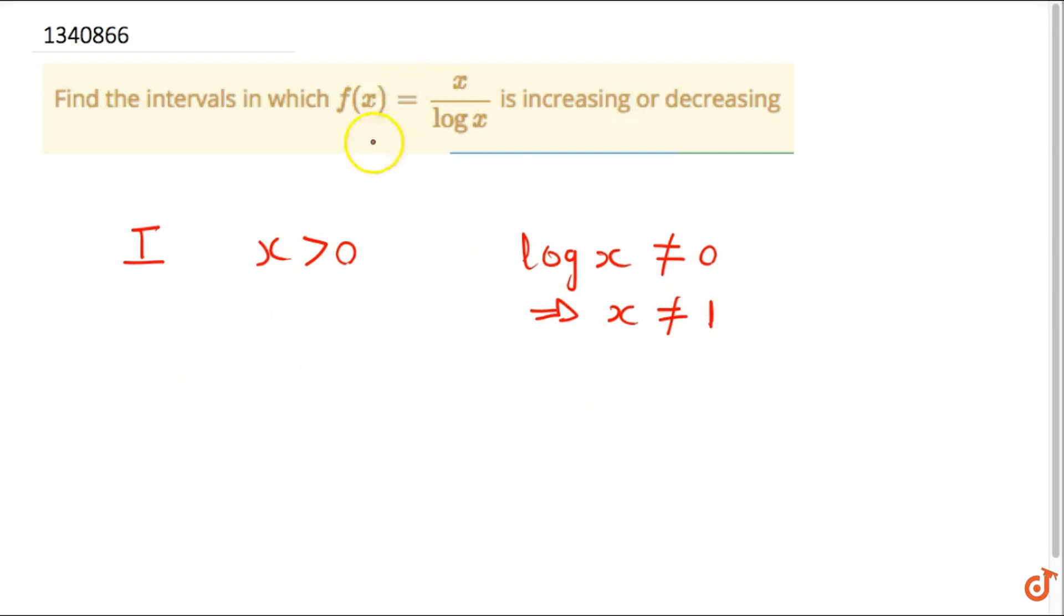At 1, we can see that f of x will be discontinuous because log of a value just less than 1 will be negative, highly negative. So this function will tend to negative infinity. And just after 1, the log of x will be very small but a positive quantity. So x by log x will tend to positive infinity. Anyways, we will find now f dash x.